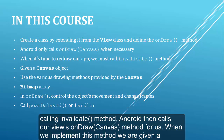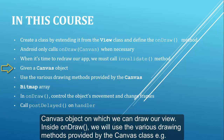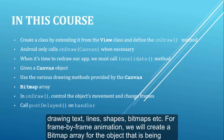Android then calls our view's onDraw method for us. When we implement this method we are given a canvas object on which we can draw our view. Inside onDraw we will use the various drawing methods provided by the canvas class — for example drawing text, lines, shapes, bitmaps, etc. For frame by frame animation we will create a bitmap array for the object that is being animated.